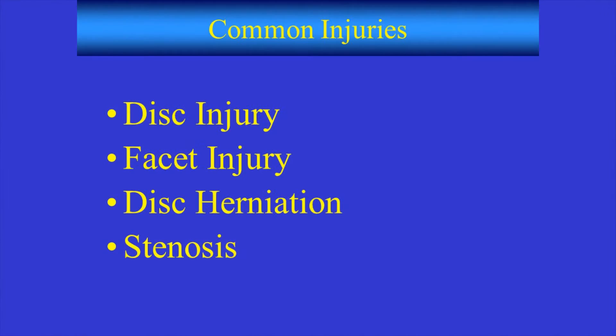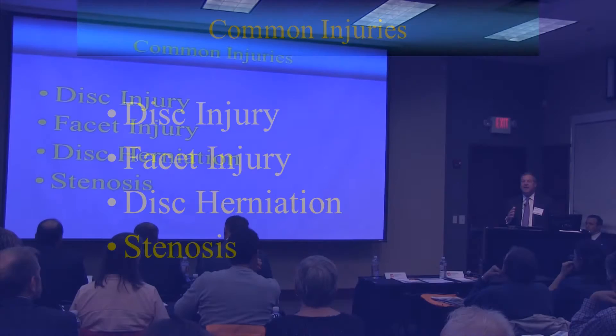The first pearl is the crossover. Periscapular and buttock pain are usually of a spine etiology; anterior pain — groin or otherwise — is oftentimes hip or shoulder pathology. The second pearl: sprains and strains don't last for weeks and months. If someone has a sprain and it's been going on for months and months, it's rarely a sprain. In the spine, you can eliminate muscular issues if they've lasted several months, and then you start looking at the main culprits: disc injury, facet injury, disc herniations, and stenosis.